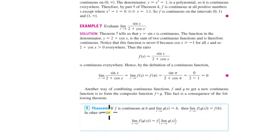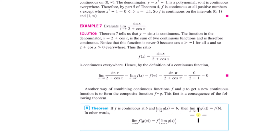This theorem states: if f is continuous at b, and the limit as x approaches a of g(x) is equal to b, then the limit as x approaches a of f(g(x)) equals f(b). This is a powerful theorem.